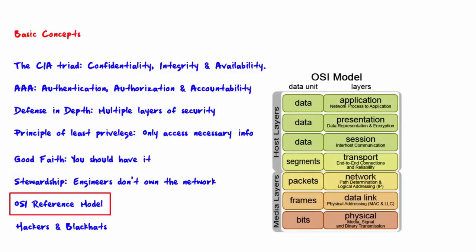The next concept is the OSI reference model. If you have not seen it, I recommend you go to Wikipedia and take a look. This is extremely important to understand, but it's too basic to go over in this course. It's something you must memorize for tests like the basic Cisco test, but it is much more useful than that — understanding which layer a particular security area falls into will help you understand things much better overall.